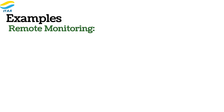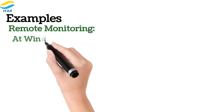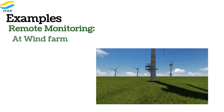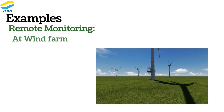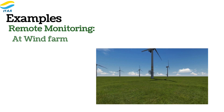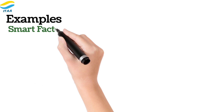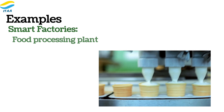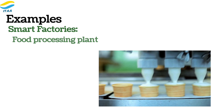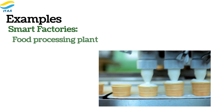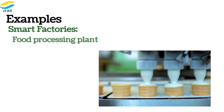For remote monitoring, at a wind farm, PROFINET connects turbines to a remote monitoring center. Operators can monitor turbine performance in real-time, reducing maintenance costs and improving uptime. In smart factories, such as a food processing plant, PROFINET connects production lines for real-time monitoring and optimization. By sending data to the control room, factories can improve product quality and reduce waste.